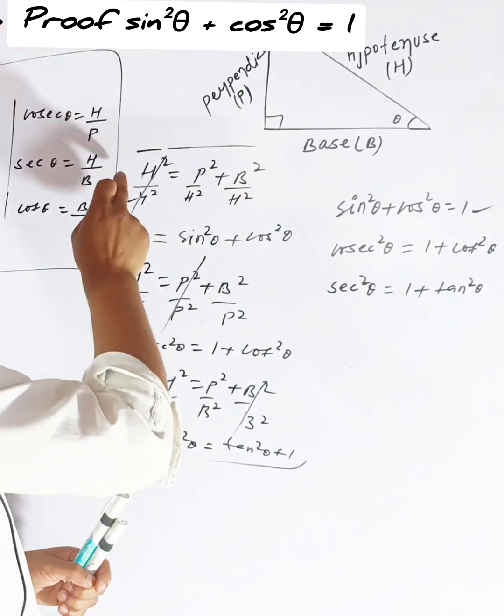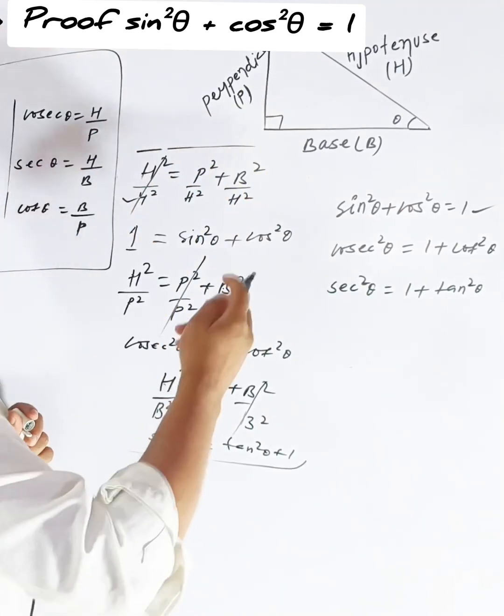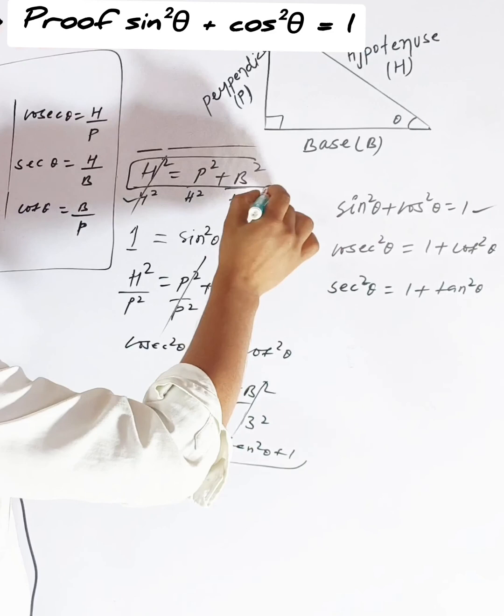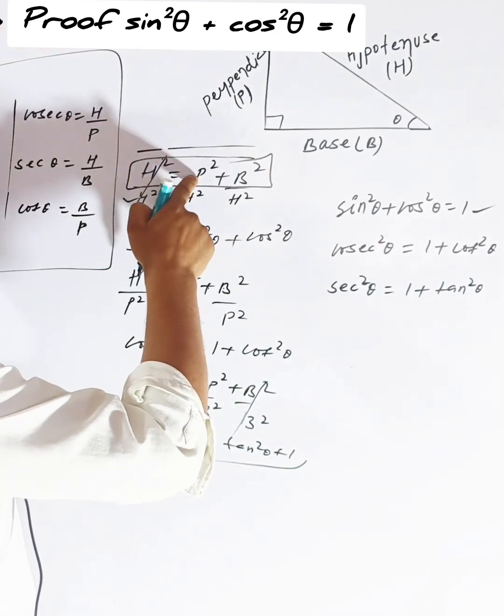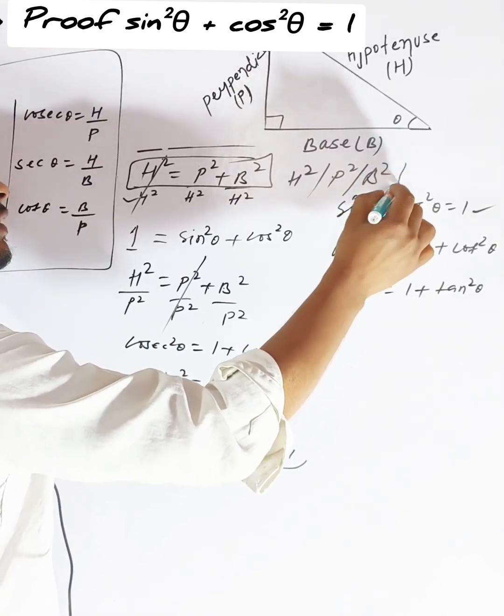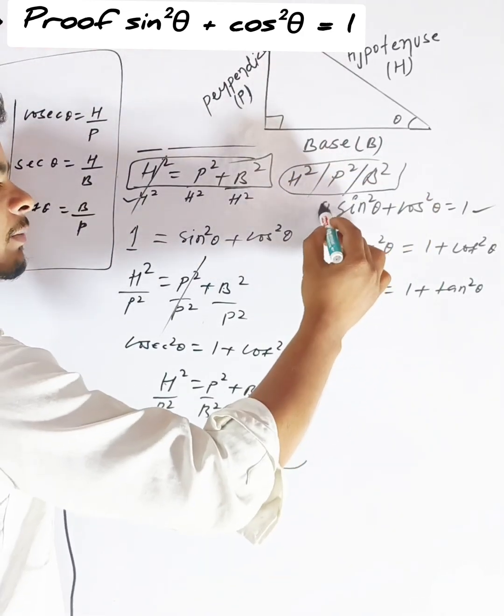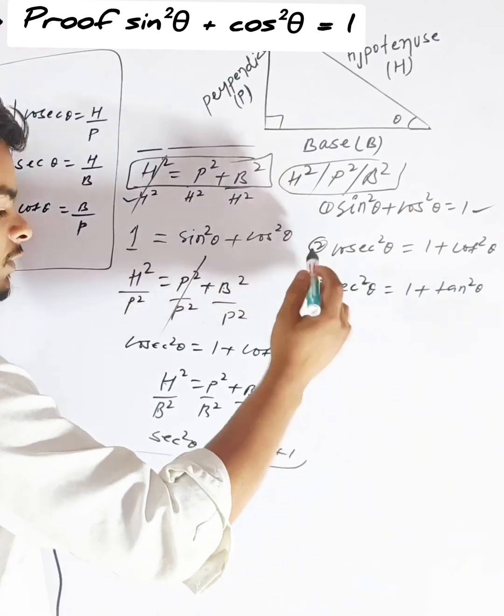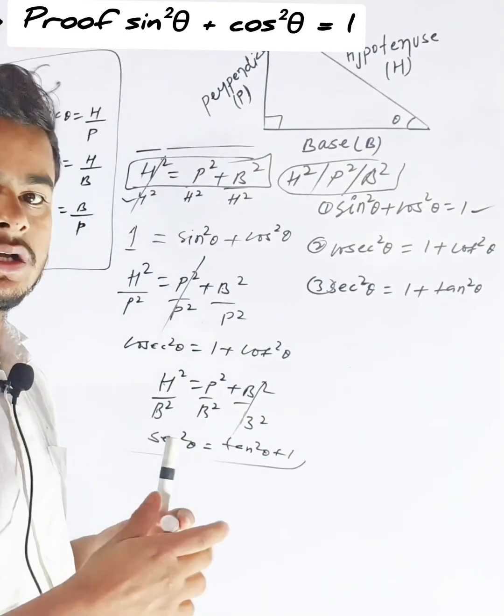Nothing has to be done. You just have to write the Pythagorean formula. What do you have to do? All three times the formula is h squared equals p squared plus b squared. Divide once by h squared, divide once by p squared, divide once by b squared. After dividing, there will be the first formula, the second formula, and the third formula. You'll get to know all three formulas like this.